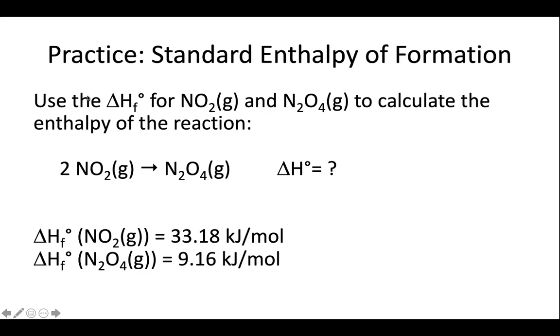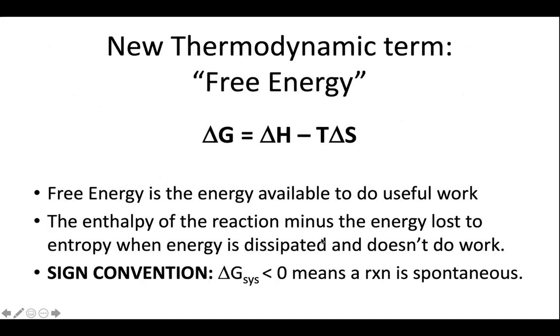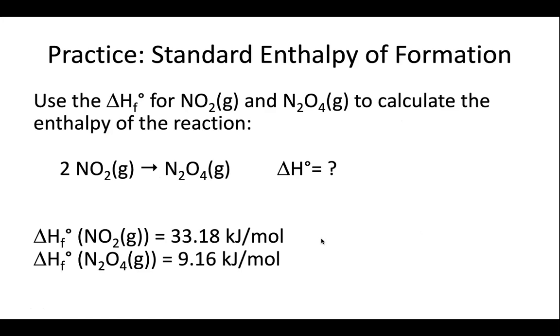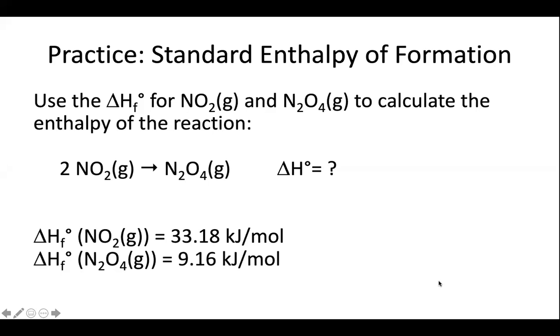Okay, so now we have the delta HF naught for NO2 and N2O4. We want to know what's the delta H naught for the reaction. What we're going to do is products minus reactants. So we'll take 9.16 minus 2 times 33.18. There is an answer. There is an answer here. Just a moment here. Negative 57.2. And this is when we do that, we're going to get negative 57.2 kilojoules per mole for delta H for this reaction using the standard enthalpies of formation.